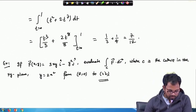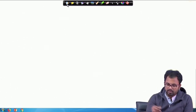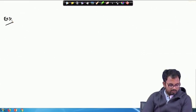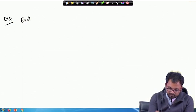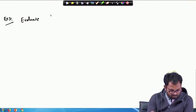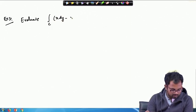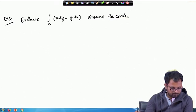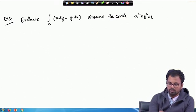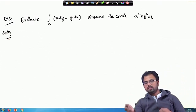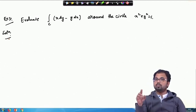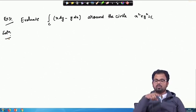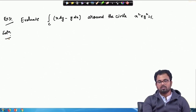We now move to Example 3: Evaluate ∮(x dy − y dx) around the circle x² + y² = 1. The given equation of the curve is a circle, which is actually a simple closed curve because it does not form any loop and does not intersect itself — so this is the circulation of the function F.